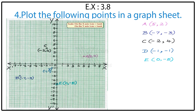Remember: first take the X value along the horizontal line, then take the Y value along the vertical line. Here the point is (0, -5), so X is 0 — stay at the origin — then Y is minus 5, so come down. That is why this point is at minus 5.